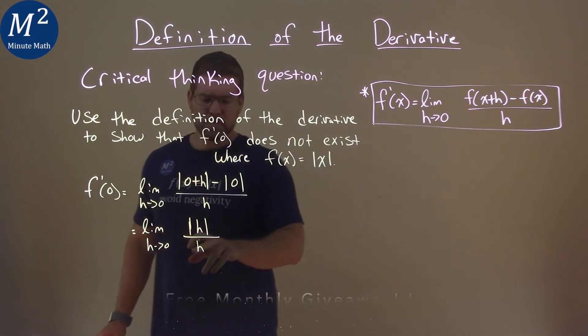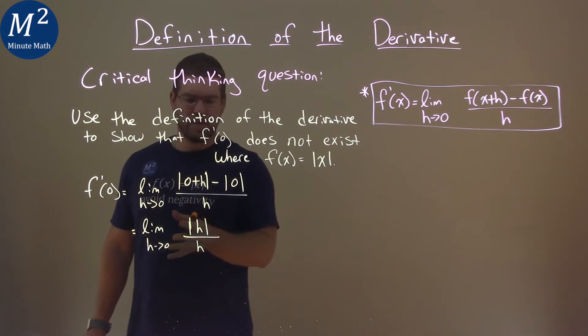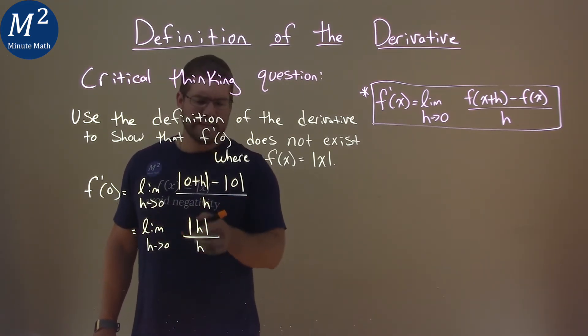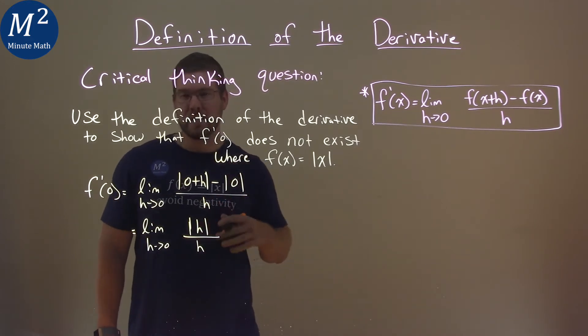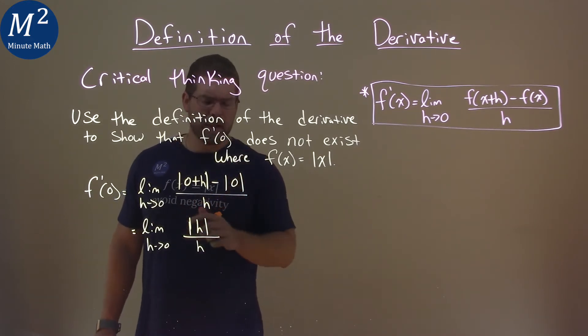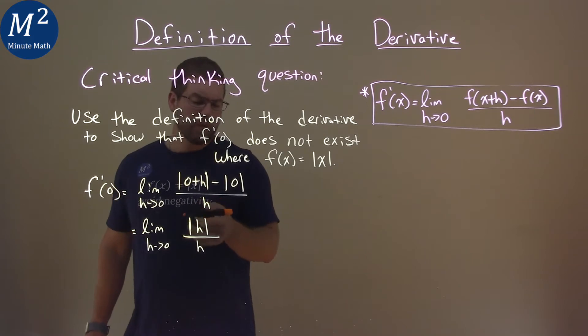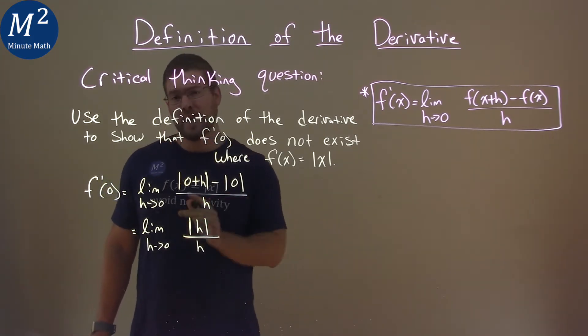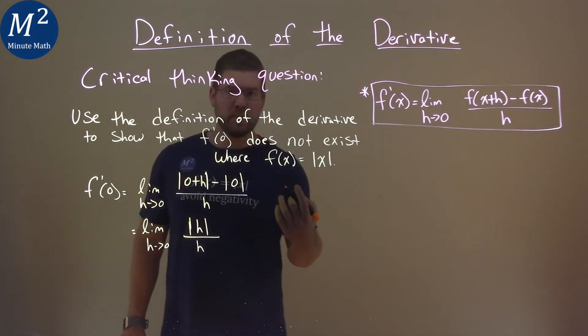But what happens here as h approaches zero? Well, what we're going to do is just go test values, and we'll see what happens at the positive and negative as we get closer to zero. Now, we're dividing by itself. h divided by h, in a sense, will always equal one. And so what we're doing there is seeing what happens as we come from the negative from the left-hand side or from the positive from the right-hand side.